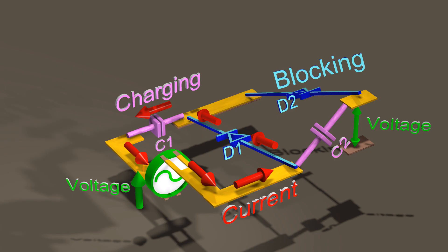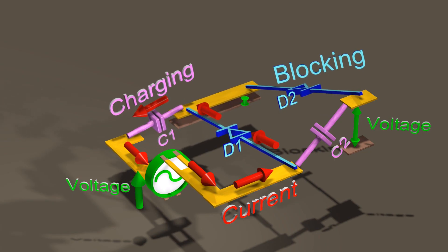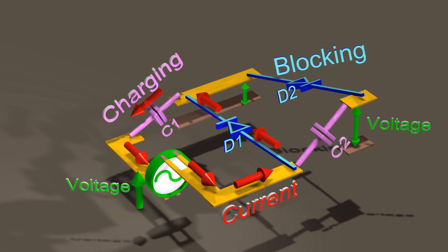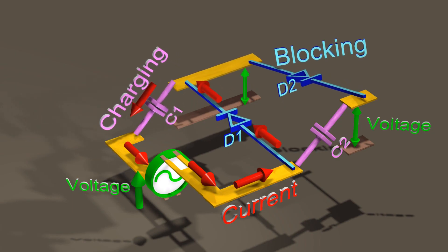Diode 1 will allow current to pass through again, thereby again charging capacitor 1. Diode 2 is blocking the charged particles from leaving capacitor 2, and capacitor 2 therefore keeps its charge and its voltage.